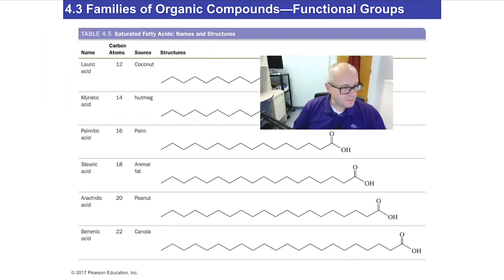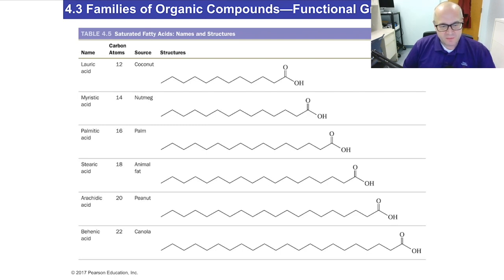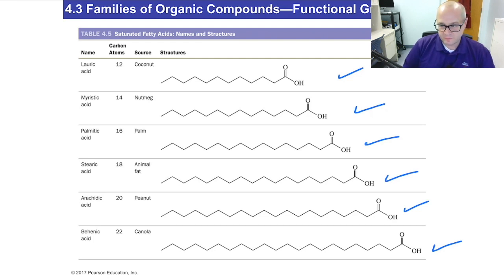Here are some examples of common saturated fats most of us are familiar with: peanut oil, canola, stearic acid from animals, palm oil, nutmeg, and lauric acid. These are all very common — I'm sure most of you have used all of them at some point in your life.